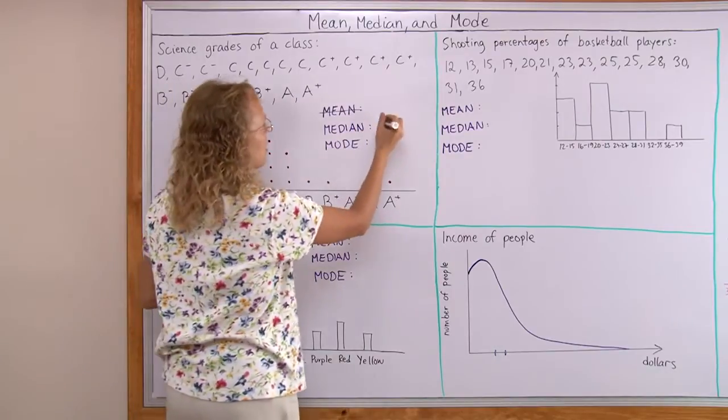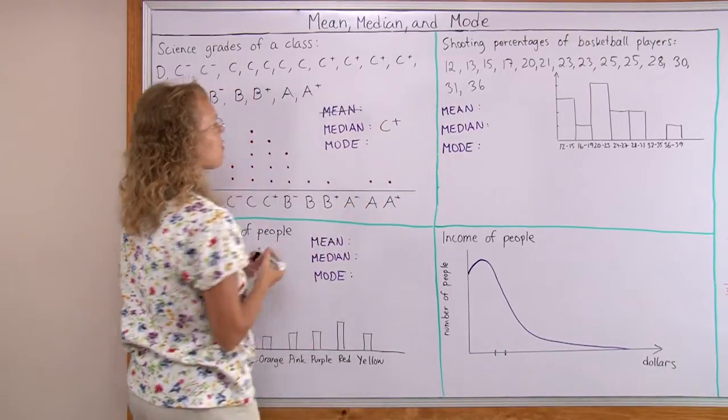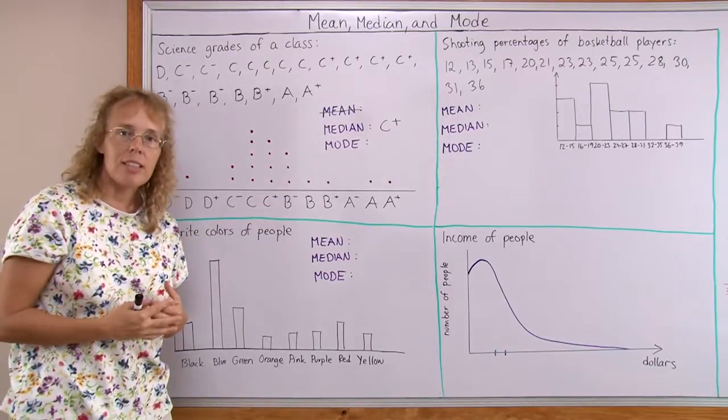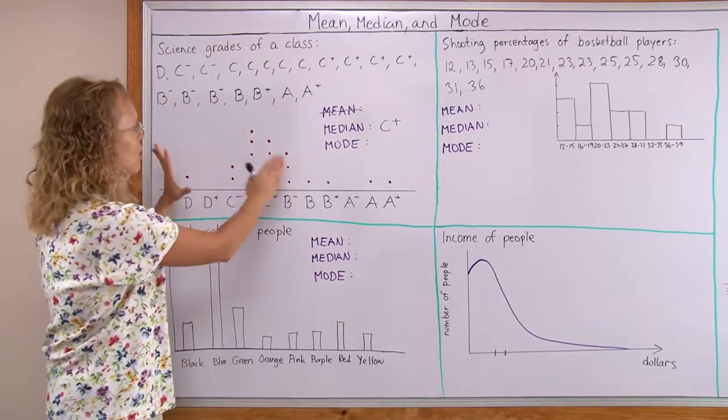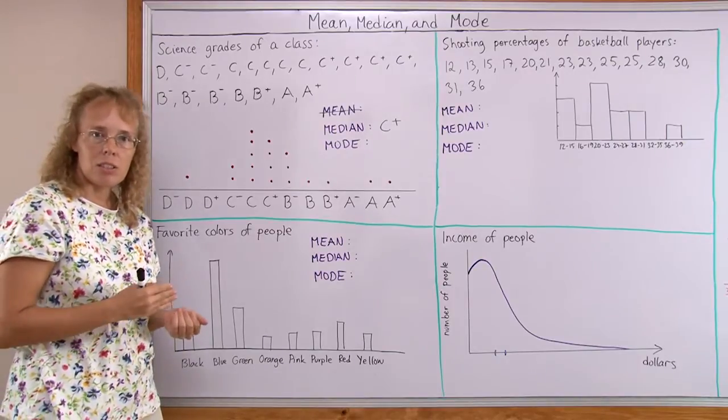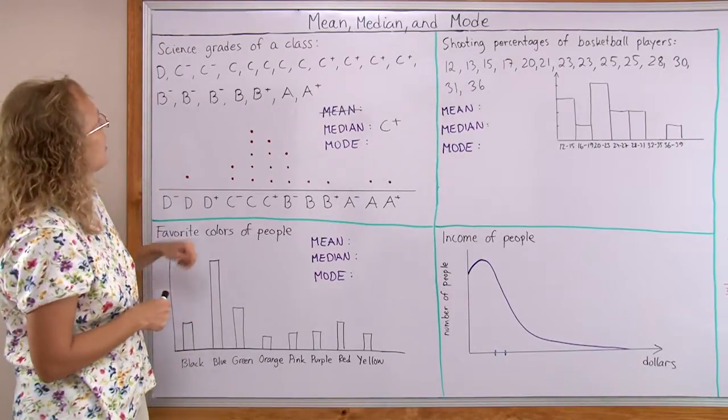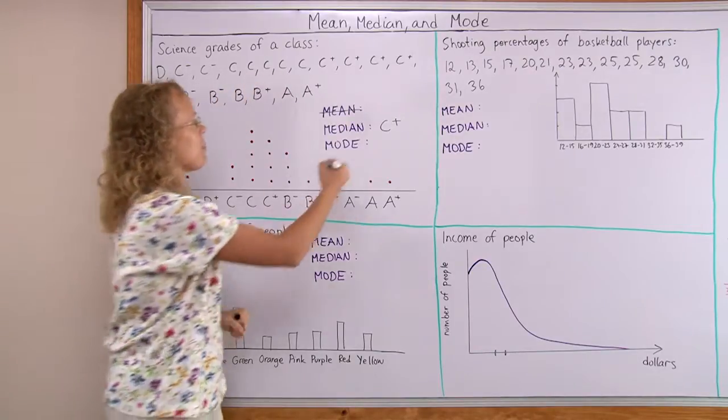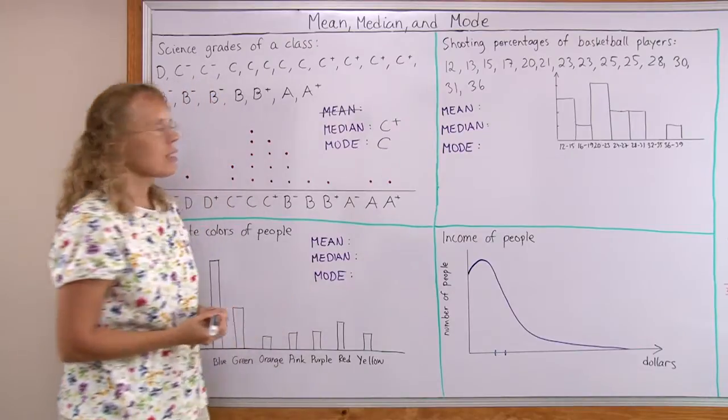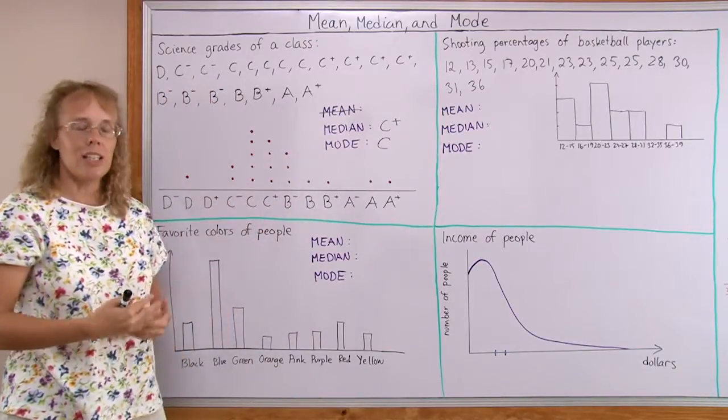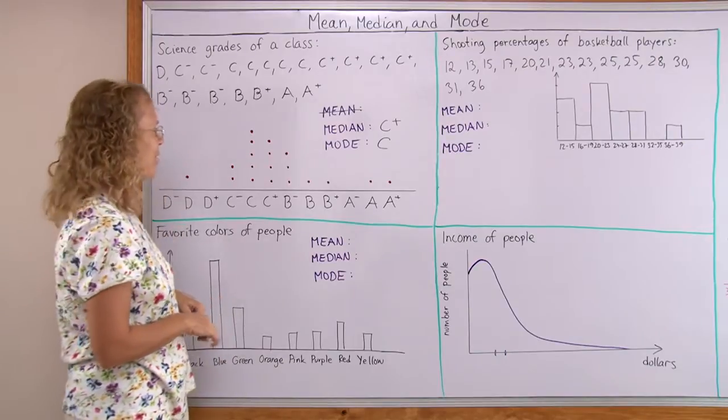C plus. So median is C plus, and that describes the central tendency of the middle of this distribution pretty good. Mode is the item that occurs most often. If I have to look at the list or look at what is highest here, it is C. So that also describes this distribution well. Both median and mode are doing good. They are helpful.